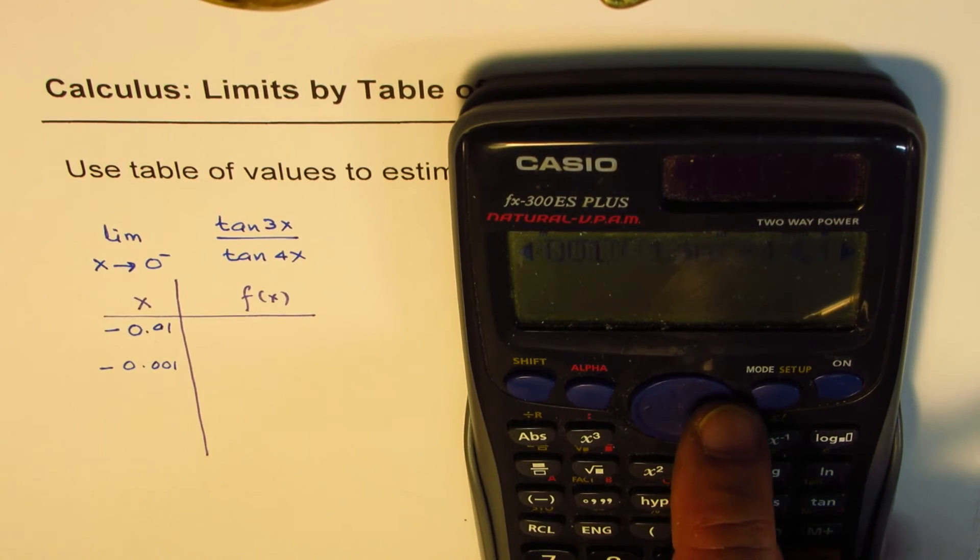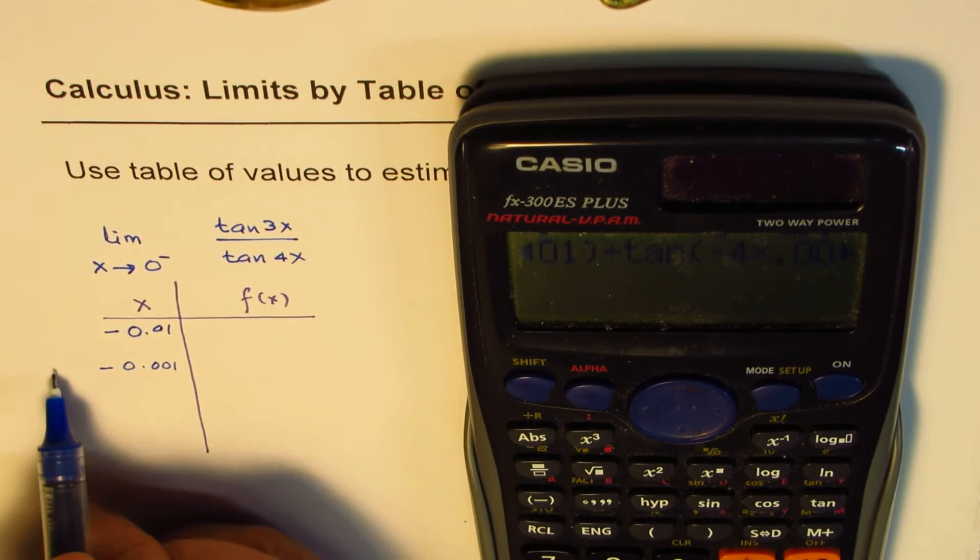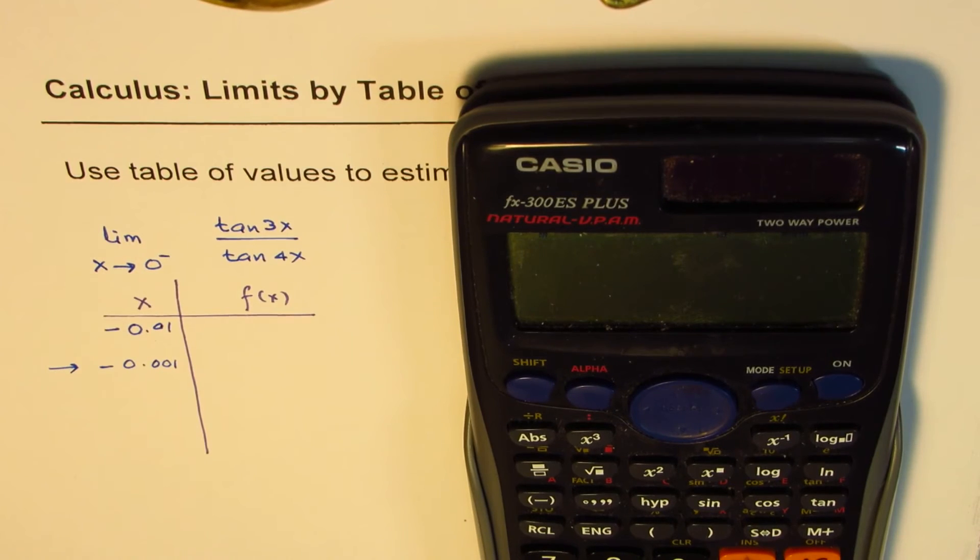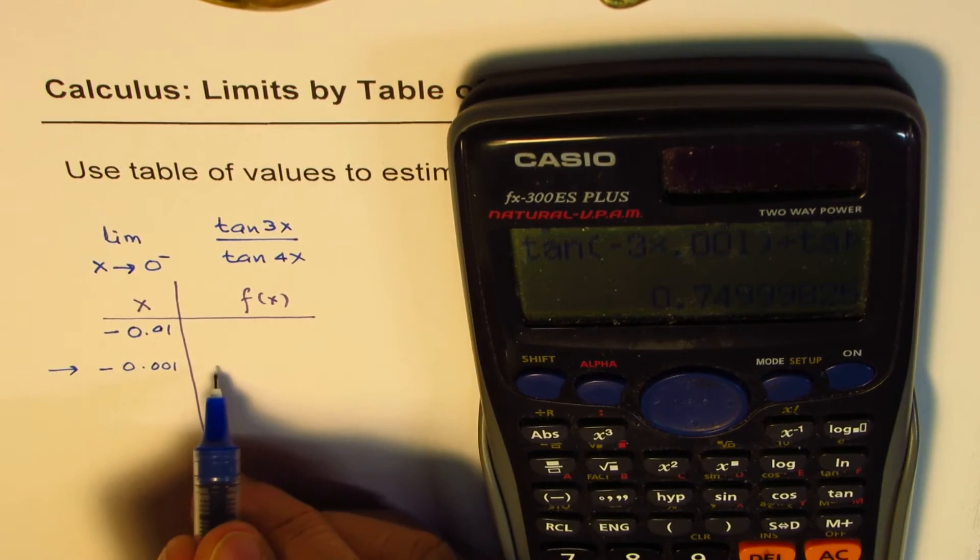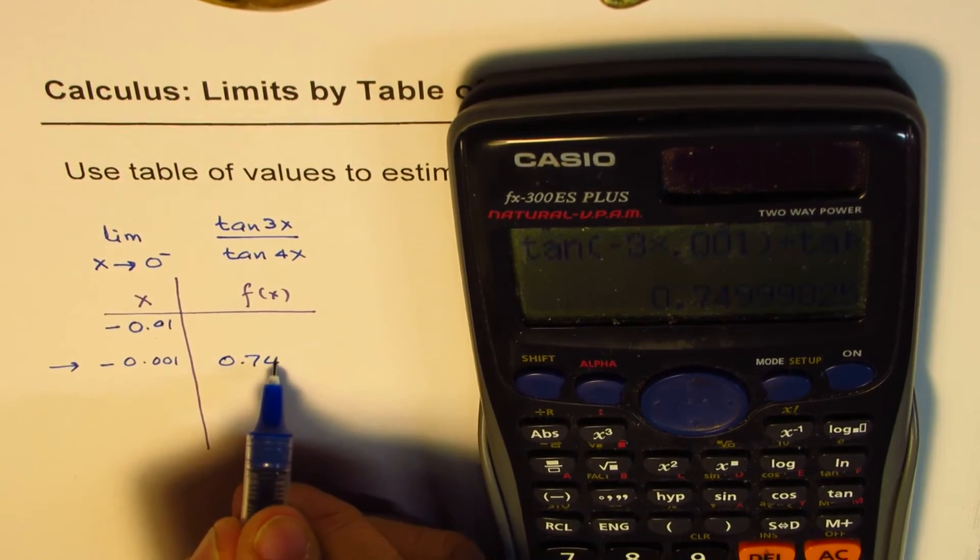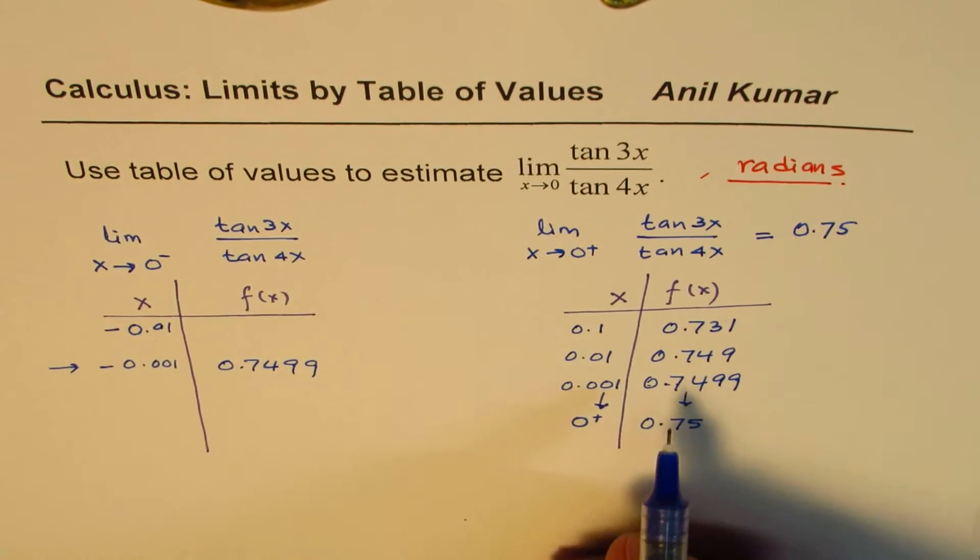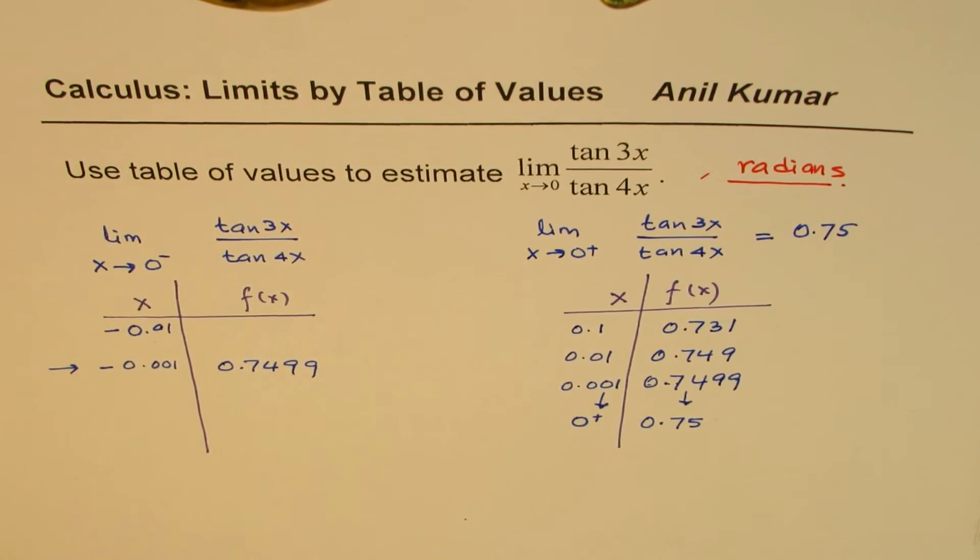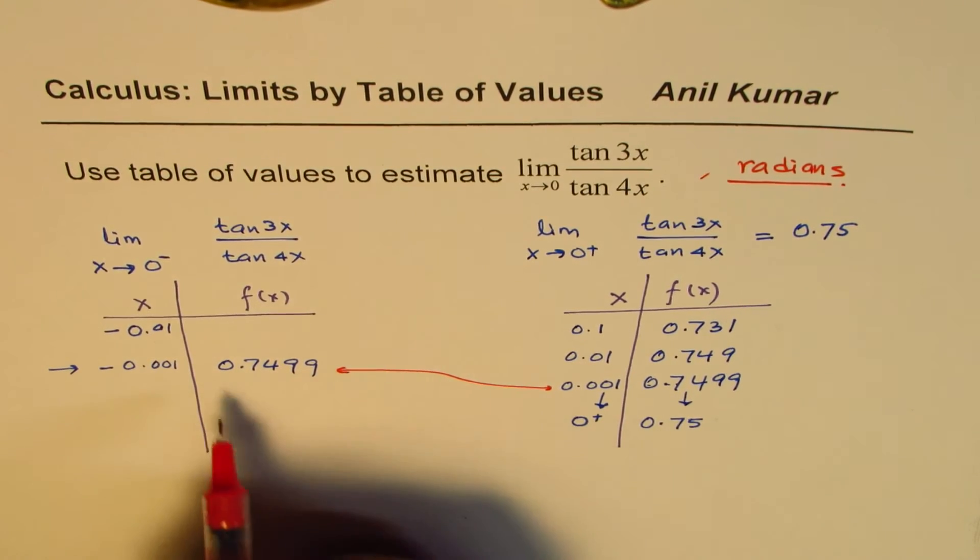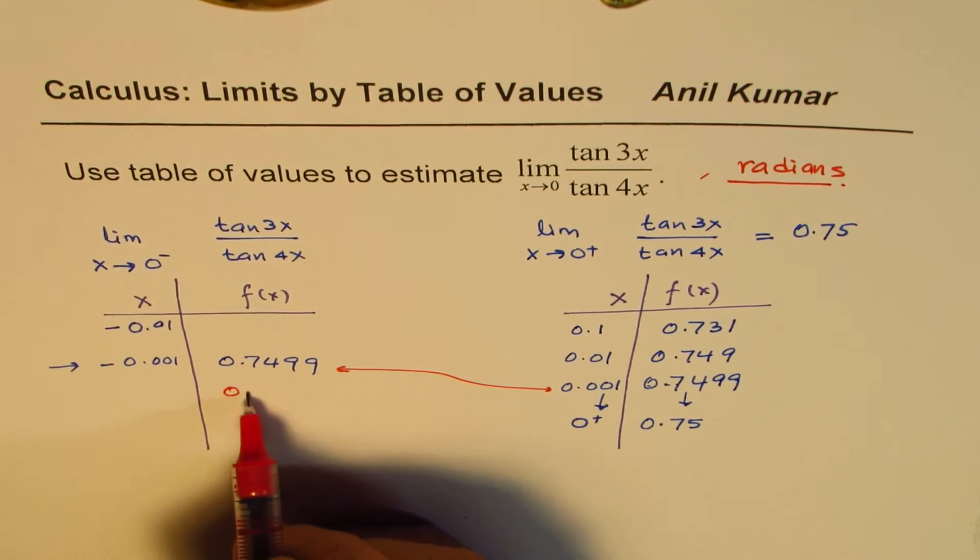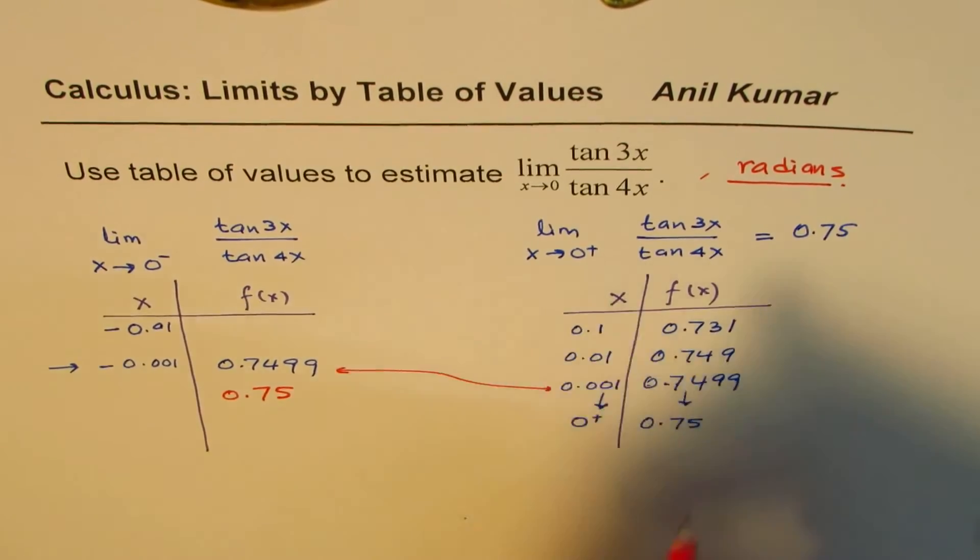So we have, we are evaluating this value, and let's say equal to, so we get the answer, which is 0.7499. As you can see, it is almost the same answer. It is the same answer. So we are approaching 0.75 here also. So this value is also approaching 0.75.